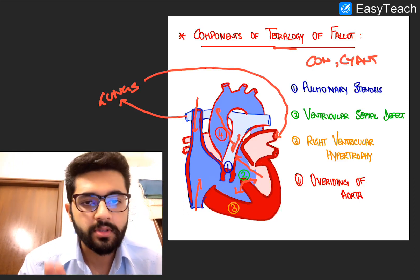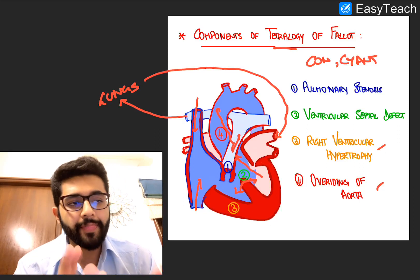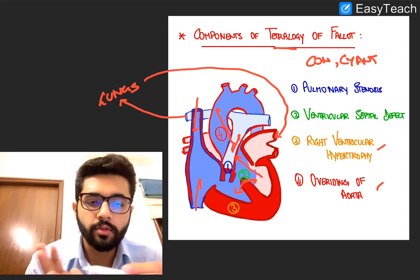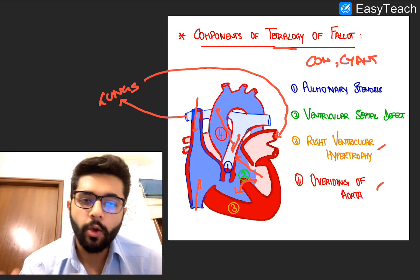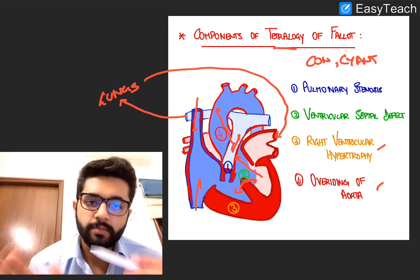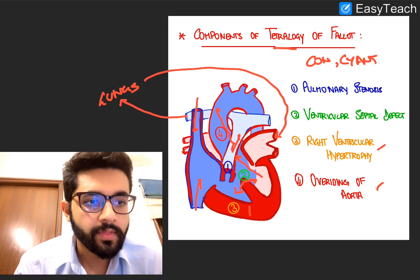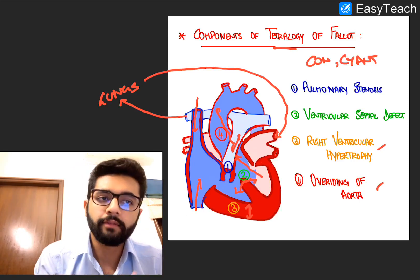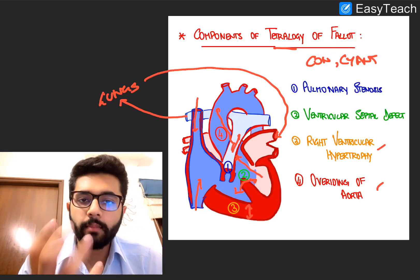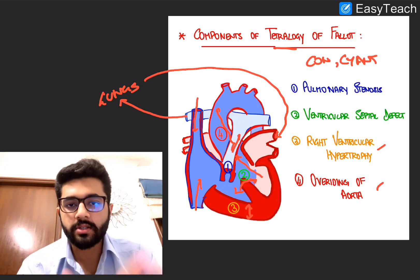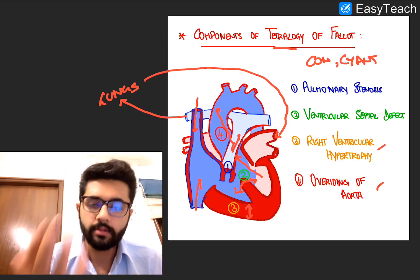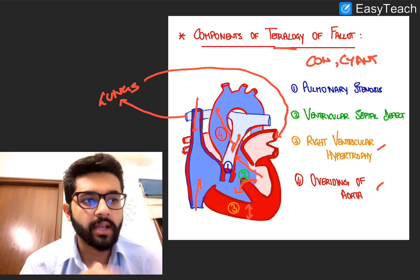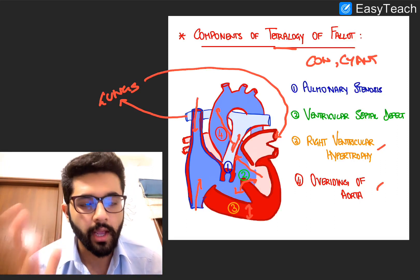Now let's talk about the next two components: Right Ventricular Hypertrophy and Overriding of Aorta — these are actually just sequelae of the first two. The right ventricle is now pumping for both the left and the right ventricle at a higher pressure. So over time, the right ventricle begins to hypertrophy because there is a high pressure system in the right heart and no blood going towards pulmonary circulation.